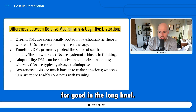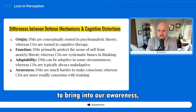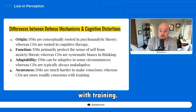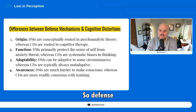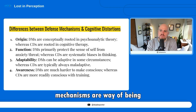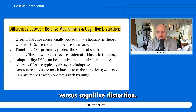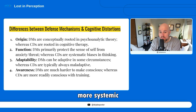Defense mechanisms are much more difficult to bring into our awareness, whereas cognitive distortions are more readily conscious with training — if you can come to understand them, you can catch them more easily. Defense mechanisms are a way of being with an action tied to that, versus cognitive distortions, which are a pattern of thinking, more systemic.